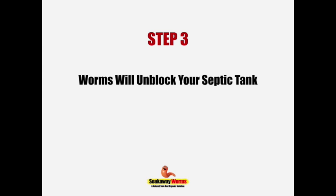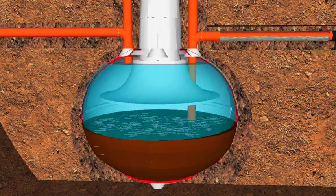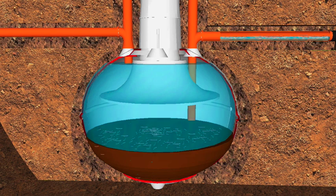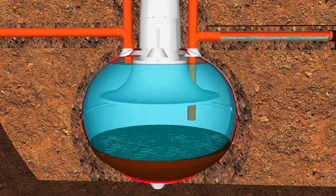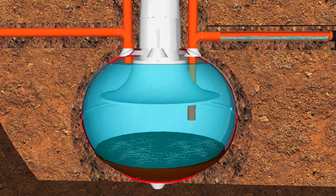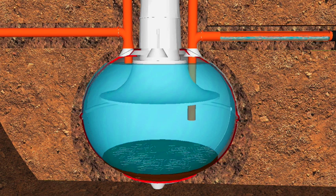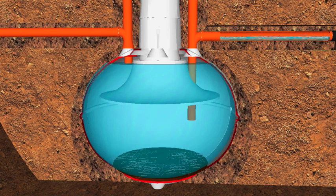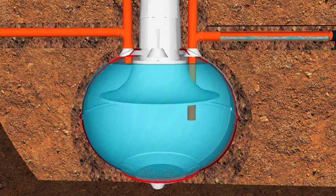Step three: soak away worms will also unblock and clean your septic tank. As we've seen, sludge is the main reason why septic tanks and soak aways develop problems. The worms will not only remove the sludge from the septic tank, they'll also keep it clean. So instead of having to desludge your septic tank once, twice, or three times a year, they'll reduce your septic tank emptying times to virtually once every 10, 15, or 20 years.